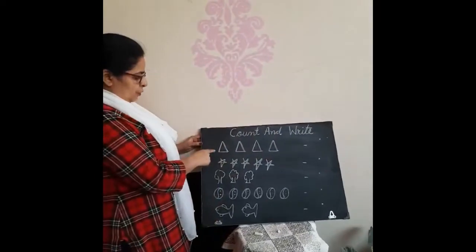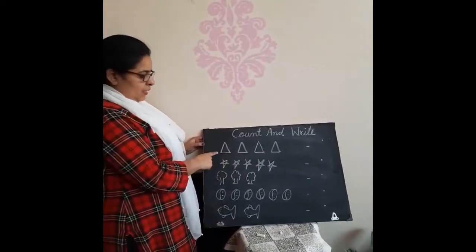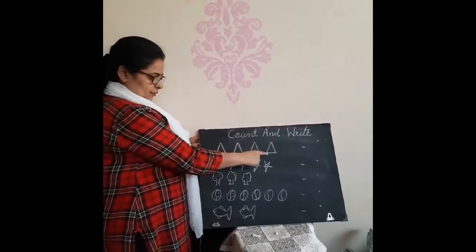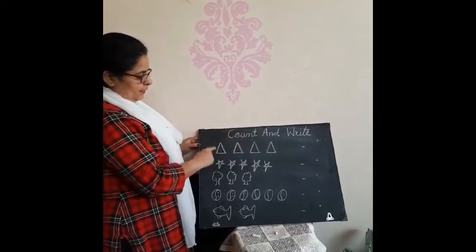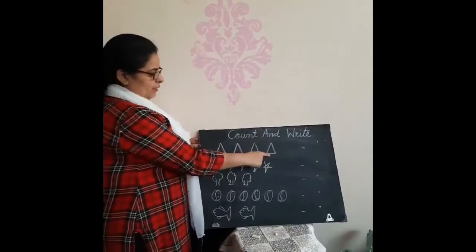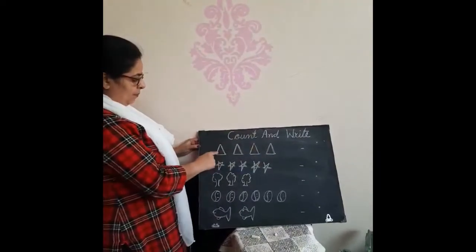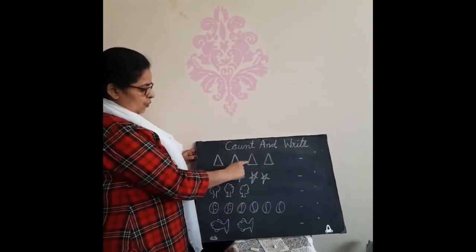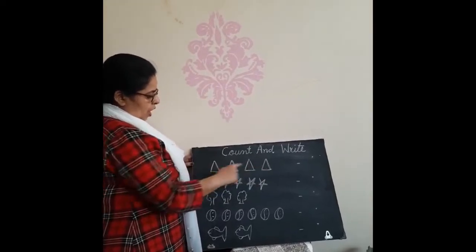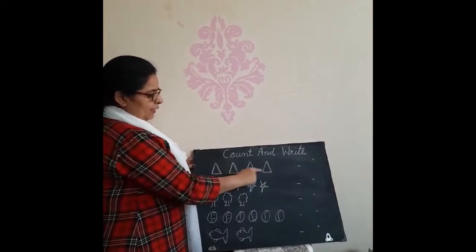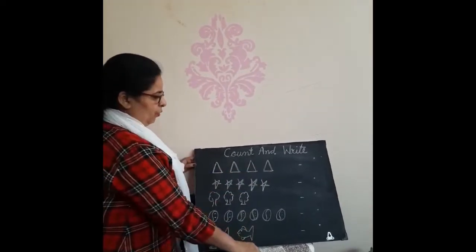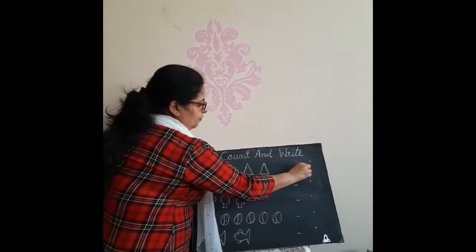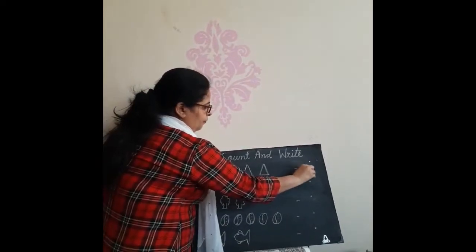Now which picture is this? These are triangles. Now count them. 1, 2, 3, 4. How many triangles are here? 4. So write down here. 4.